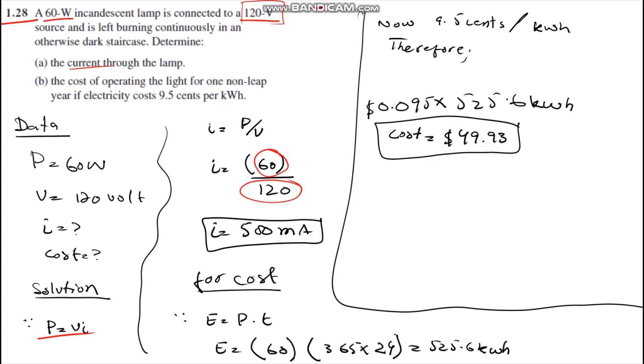Now for the cost, we have to calculate energy first. We simply multiply power by time: 60 watts times 365 days times 24 hours, which gives us 525.6 kilowatt-hours of energy. This means the bulb will absorb 525.6 kilowatt-hours of energy in one year.